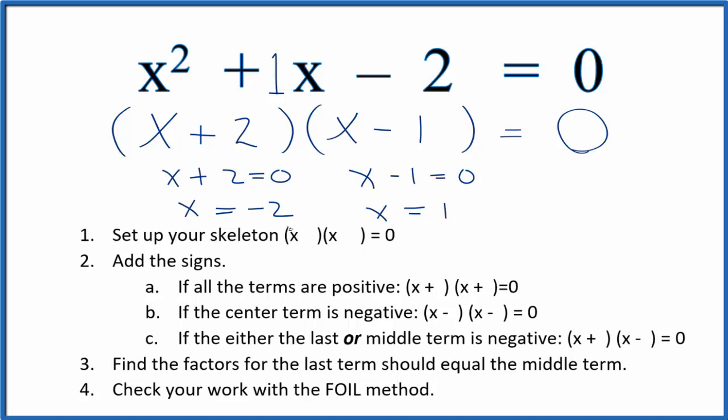So if we put these numbers in here, if we put a minus 2 here for x and a minus 2 here for x and we did the math, this would all equal 0. Likewise, if we put a 1 in for x here and here, add this all up, it would equal 0. So we know that these are correct.